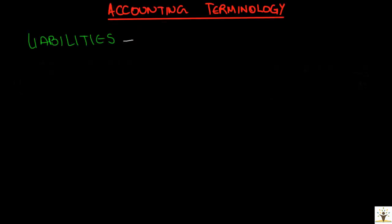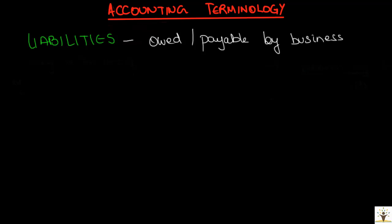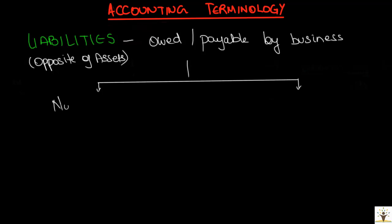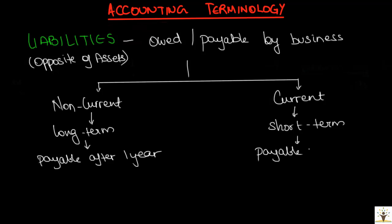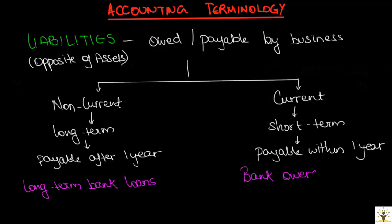On the other hand, we have liabilities. Liabilities are amounts owed and payable by the business. Liabilities can also be of two types: non-current liabilities and current liabilities. Non-current liabilities are the long-term liabilities which are payable by the business after a period of one year, whereas current liabilities are the short-term liabilities which are payable within a period of one year. An example of a non-current liability could be a long-term bank loan payable after one year. An example of a current liability could be a short-term bank loan, for example bank overdrafts.